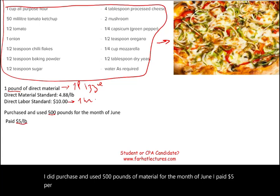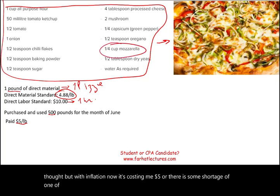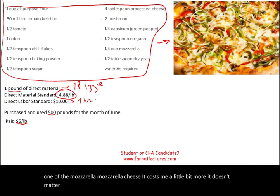We purchased and used 500 pounds of material for the month of June, and we paid $5 per pound. We thought it would cost $4.88, but with inflation or a shortage of mozzarella cheese, it's now costing $5. What you pay versus what you thought you'd pay differ — and this is what we need to study. The $5 is the actual price.